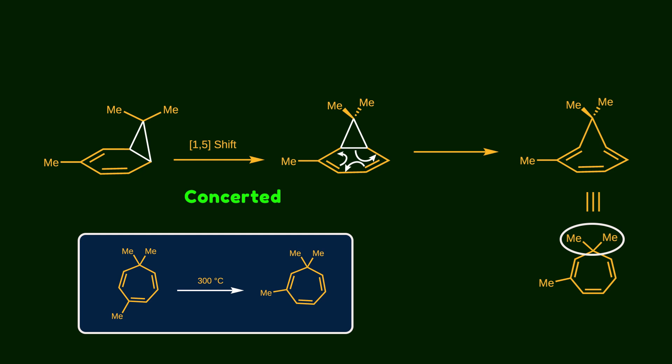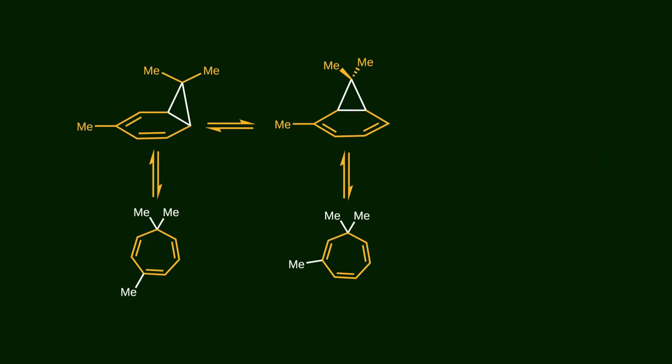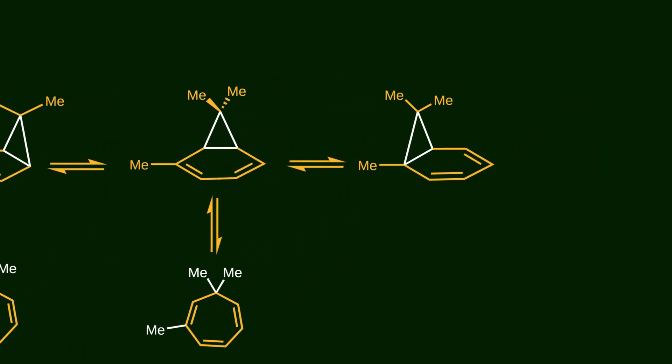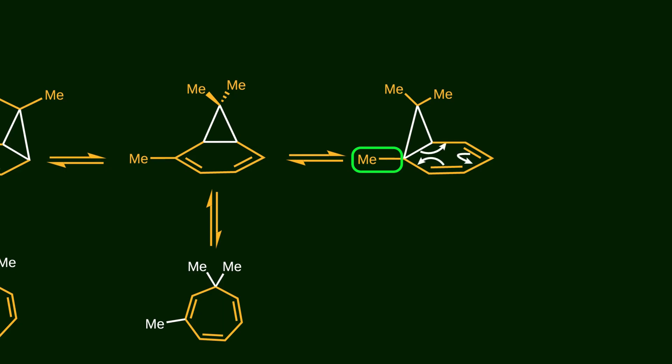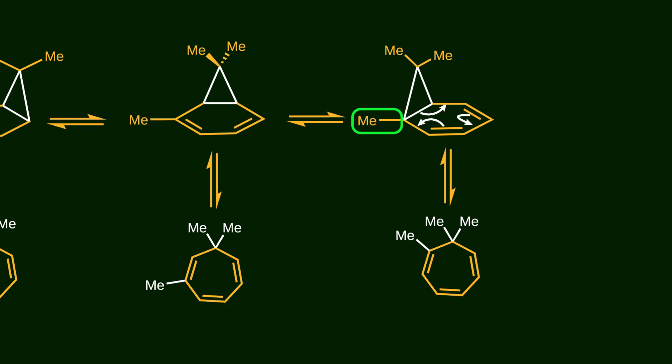Until now we've completely answered the question with a clear mechanism. But let's explore the mechanism slightly deeper. Actually the 3-membered ring can undergo another 1-5 shift just like the previous step, leading to this intermediate, where the 3-membered ring is now closer to the methyl group. After cleavage of the sigma bond and reformation of the tropilidin skeleton, another isomer is formed in which the methyl group is positioned adjacent to the geminal methyl groups.